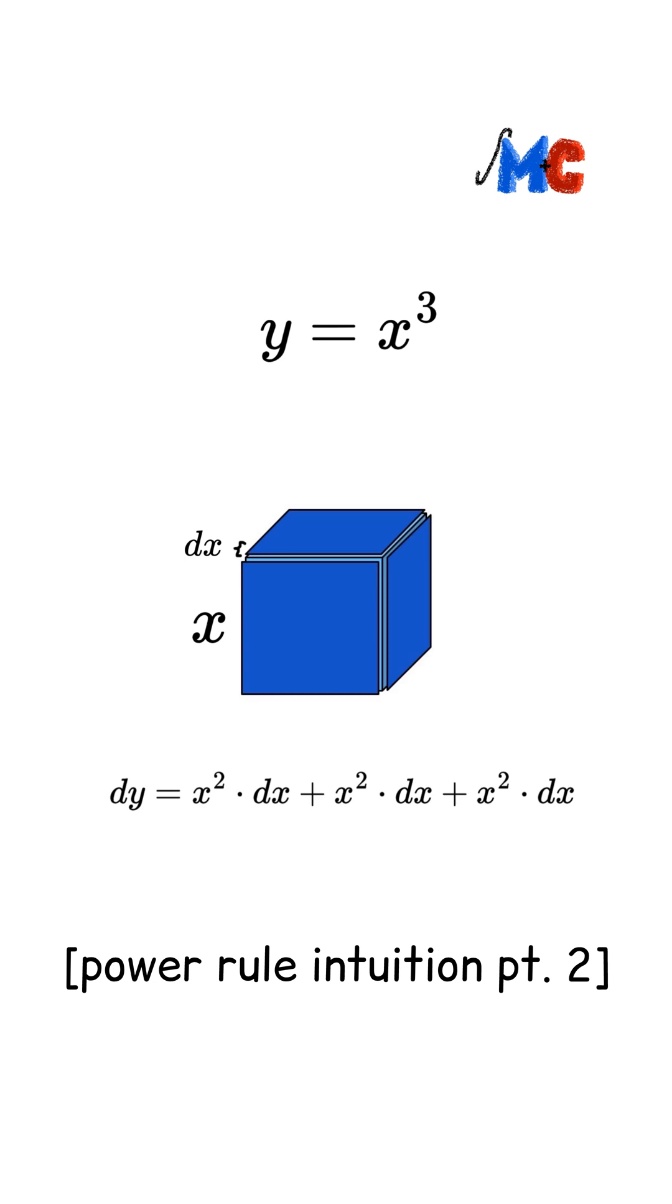Now, all we have to do is combine our like terms, and we get that dy equals 3 times x squared times dx.